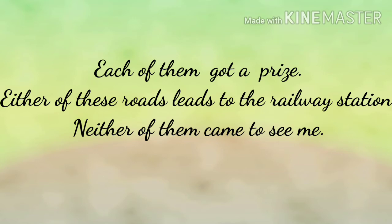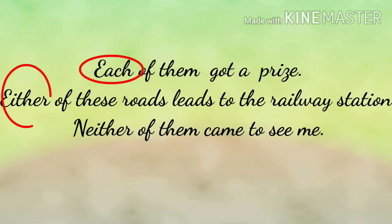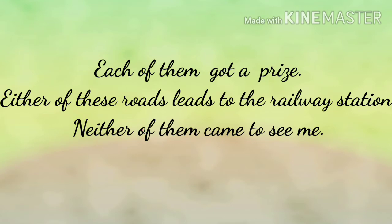Here are some examples: 'Each of them got a prize.' 'Either of these roads leads to the railway station.' 'Neither of them came to see me.' Here, each, either, and neither are distributive pronouns.